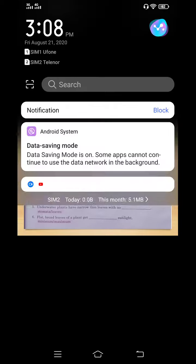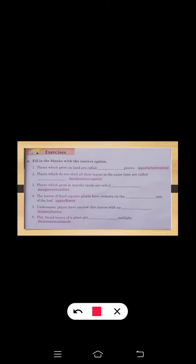Fill in the blanks with the correct option. The first one is: Plants which grow on land are called [blank]. The answer is terrestrial. Second one is: Plants which do not shed all their leaves at the same time are called evergreen plants.